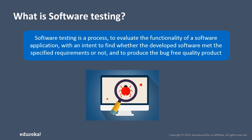The primary purpose of testing is to detect software failures so that it is easy to find defects and correct them. It provides objective information about the quality of the software and the risk of its failures to the users. The scope of testing decides what is supposed to be done to the system. These are the major reasons why testing is widely used in organizations to improve the rate of production.